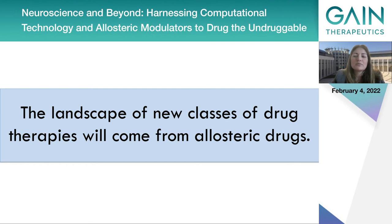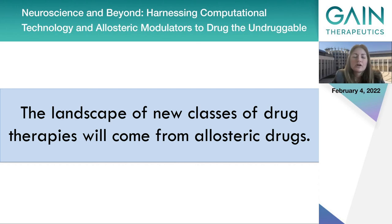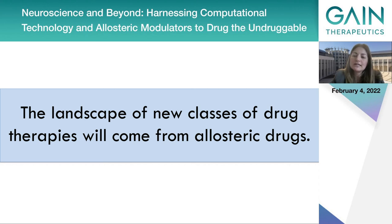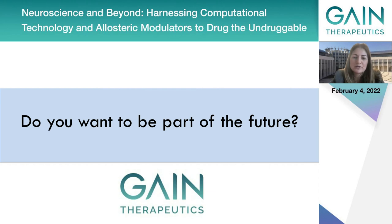It is my strong belief that the landscape of new classes of drug therapies will come from allosteric drugs. While drug discovery is challenging and has encountered many highly costly failures, the fact that proteins are considered undruggable does not imply that this is indeed the case. Transient allosteric pockets in undruggable proteins, or in proteins with which undruggable proteins associate, can and will lead to therapeutic advances. Without doubt, allostery will lead the drug discovery efforts of the future. Do you want to be part of this future? Thank you very much.